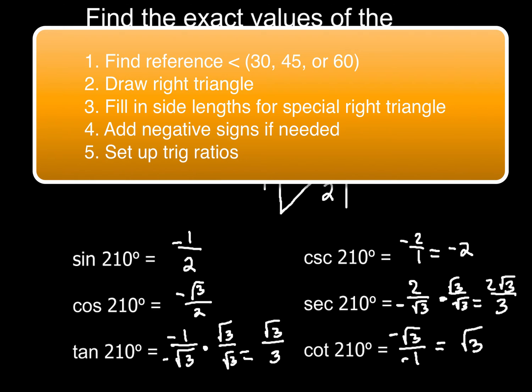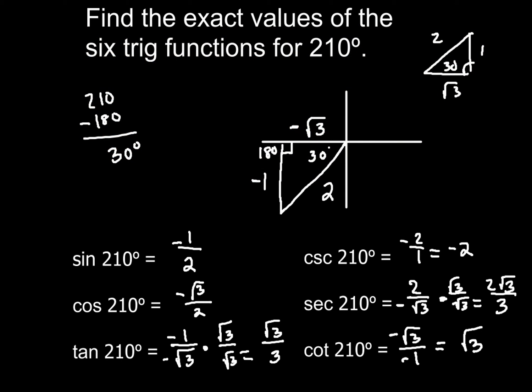So that's all you have to do. So the first thing was find a reference angle. Then, the second thing, you had to draw a right triangle. The third thing was fill in the values for any of the side lengths. The fourth thing, you just had to pay attention to whether you had to add a negative sign if needed. And then lastly, we just go through and set up our trig ratios. And that's all that you need to do for this. Not a big deal.